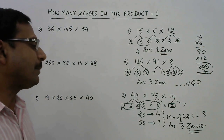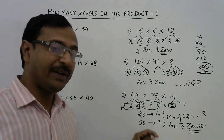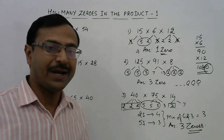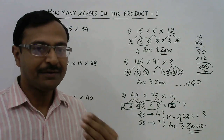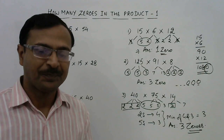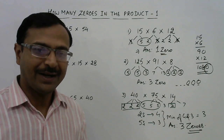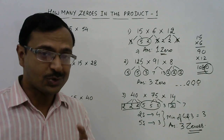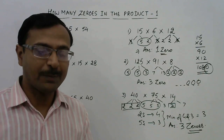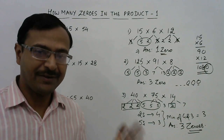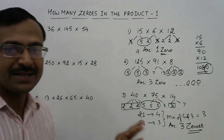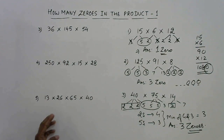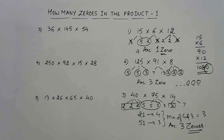So you have to take the minimum of the number of twos and the number of fives. I think that solves many of the problems faced in competitions. Let's see three more questions with numbers that are a little bit larger.